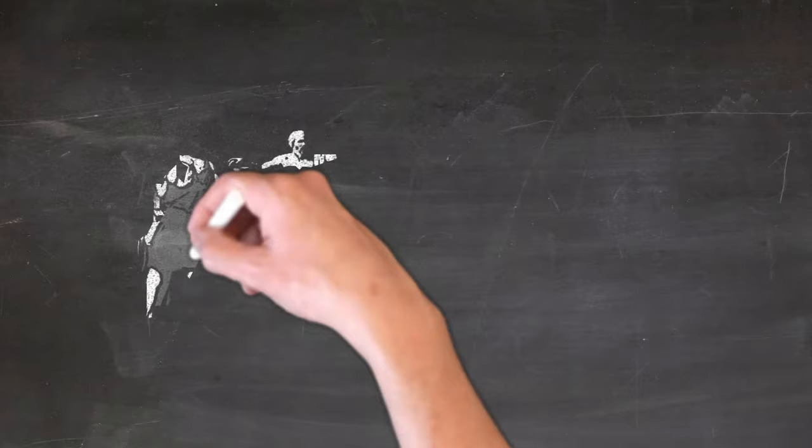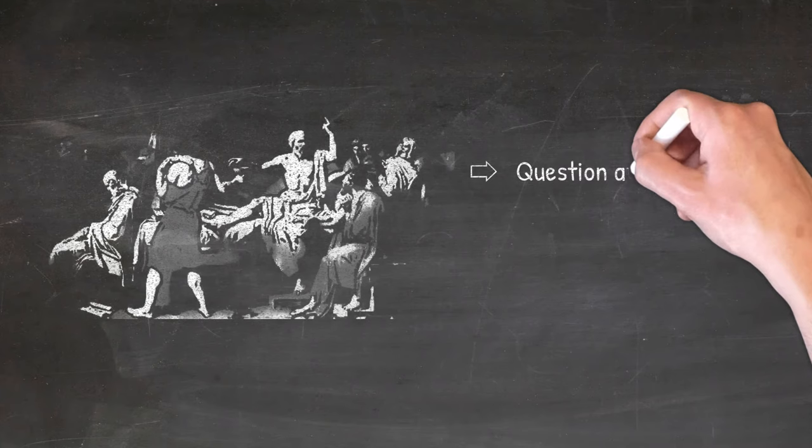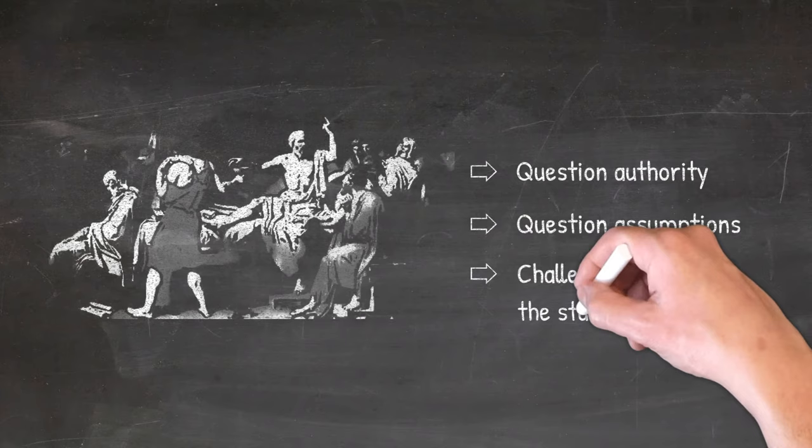Socrates died at the age of 71, given a death sentence for corrupting the youth and not believing in the gods of the city of Athens. He taught people to question authority, to question assumptions, to challenge the status quo. This did not go down well with many, who felt their power threatened by his teachings.